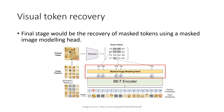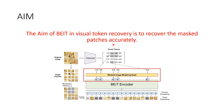The final stage is to ask our BEIT to predict the visual token corresponding to the masked image. This is done by having a masked image modeling head appended to our BEIT. The aim of BEIT in visual token recovery is to recover the masked patches as accurately as possible — for example, a particular patch corresponds to output token 234, and these must match. That is how we pre-train our BEIT.